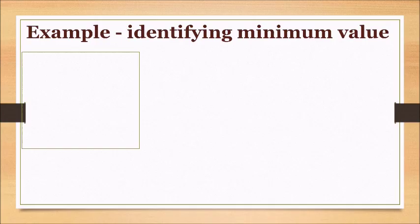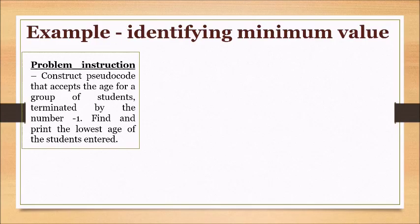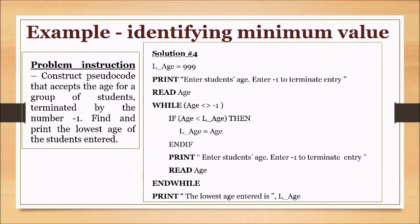Example of identifying the minimum value using a loop: the following problem statement requires a pseudocode that accepts the age for a group of students, terminated by the value negative one. The algorithm is then required to find and display the lowest age of the students entered. The solution starts by showing the initialization of a variable used to store the lowest age. A prompt and input statement is then used to accept the age of the first student.